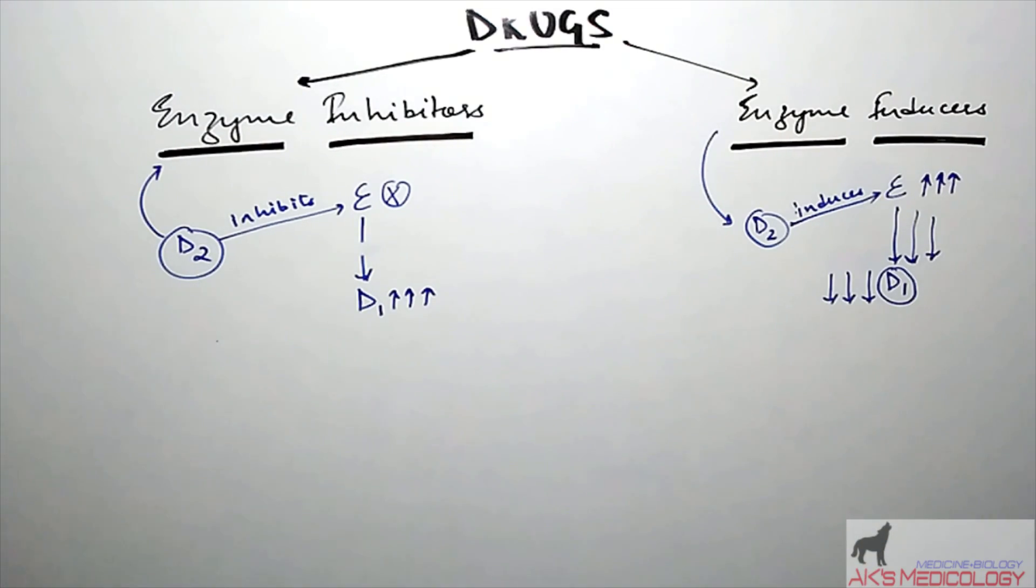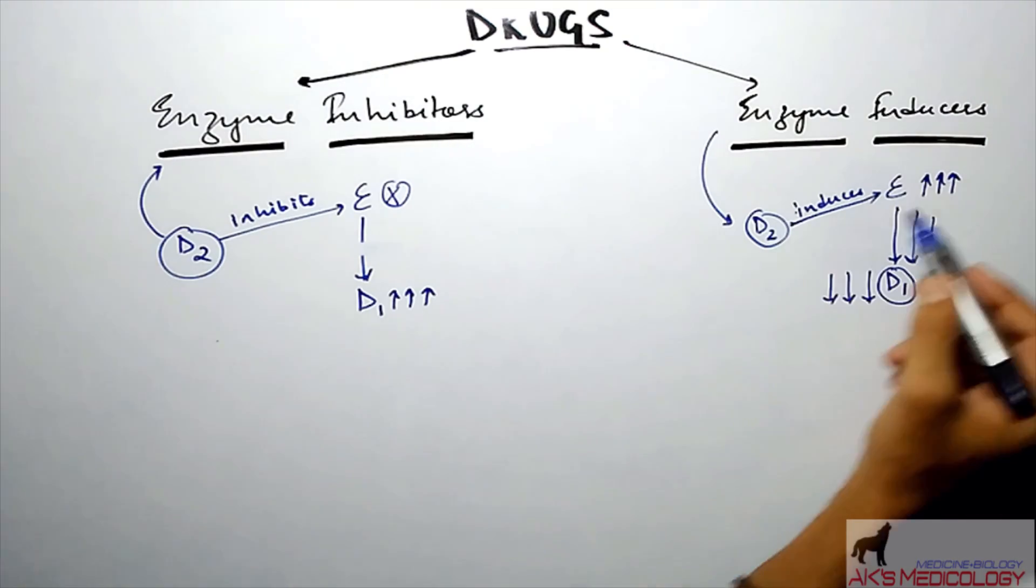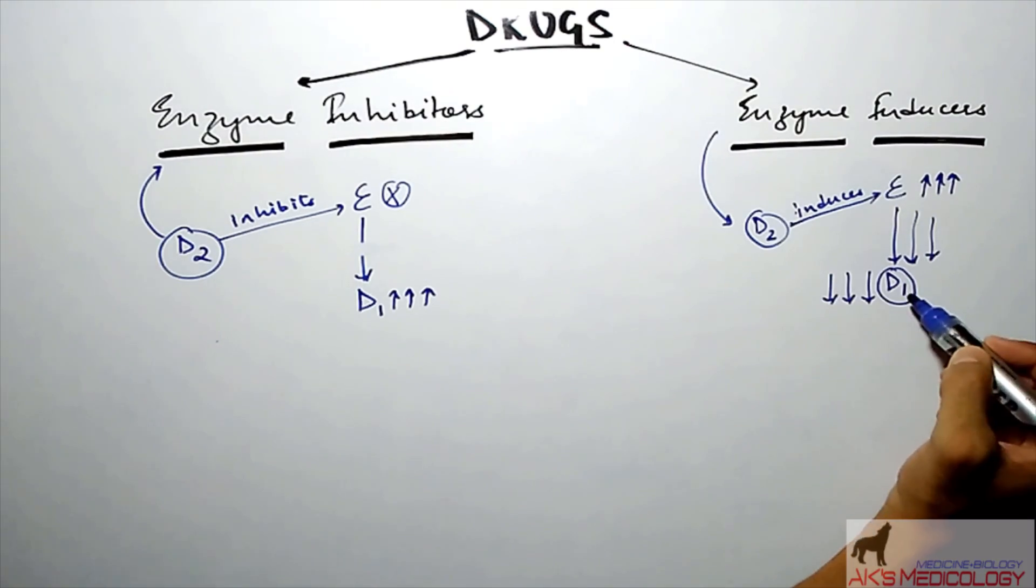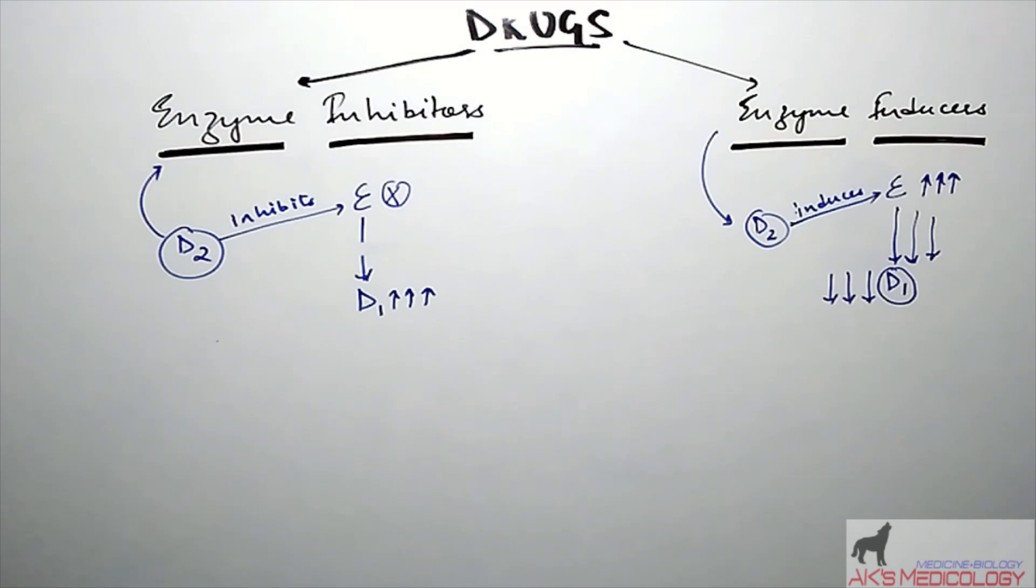This could be better explained by an example. Suppose D1 is the oral contraceptive pill which a woman is taking, and consequently she's also administered rifampin or rifampicin, which is an enzyme inducer. So rifampicin induces the enzyme E which acts on the oral contraceptive pills, increasing their metabolism and leading to reduced efficacy of the oral contraceptive pills, that is failure of OCPs.